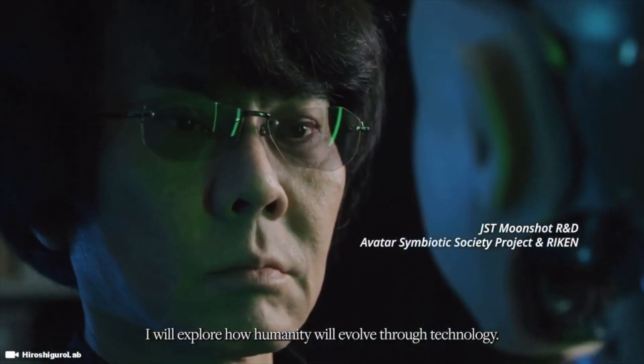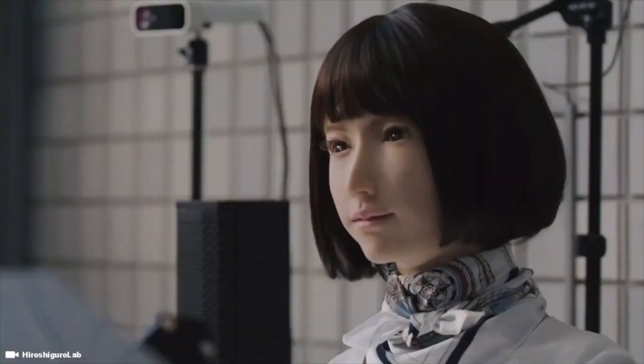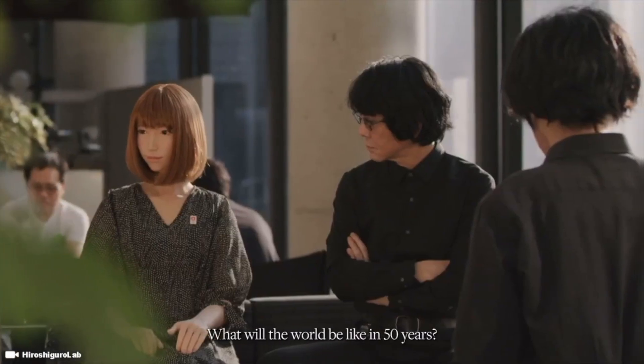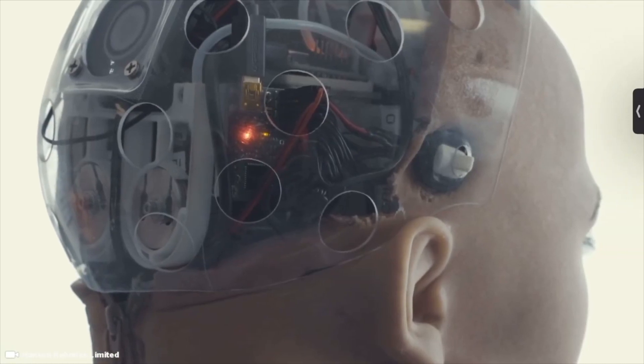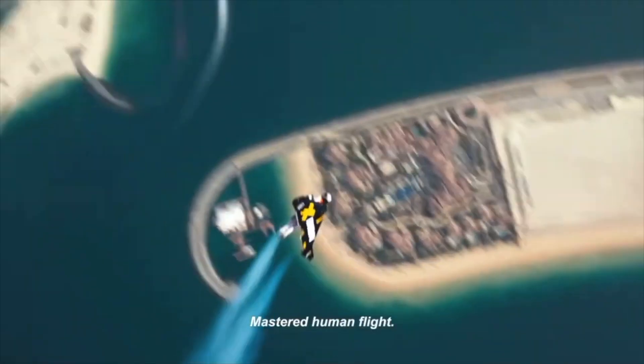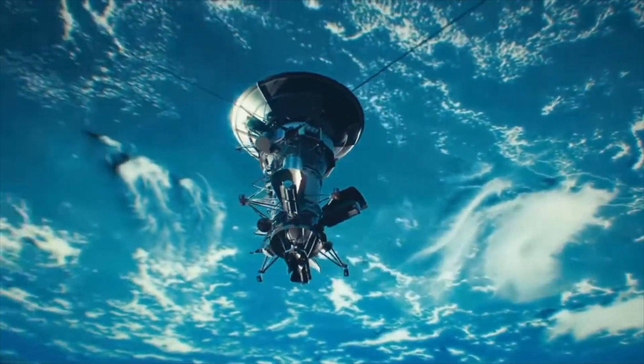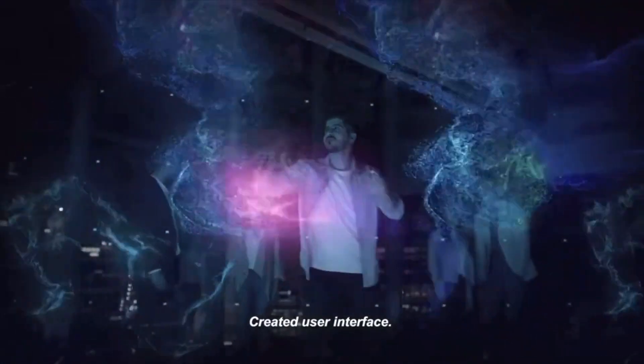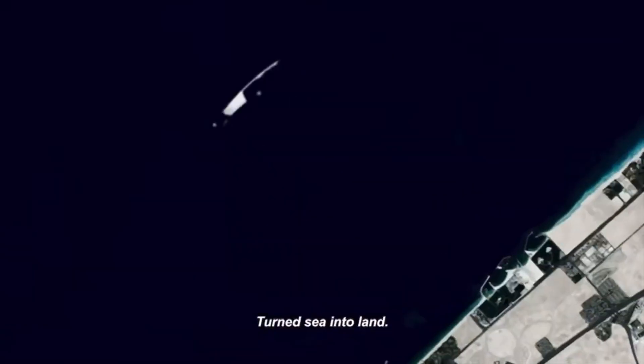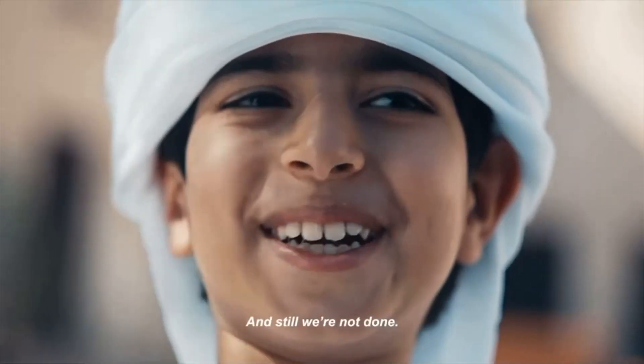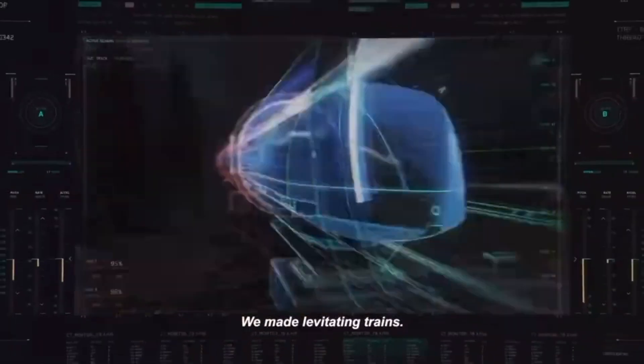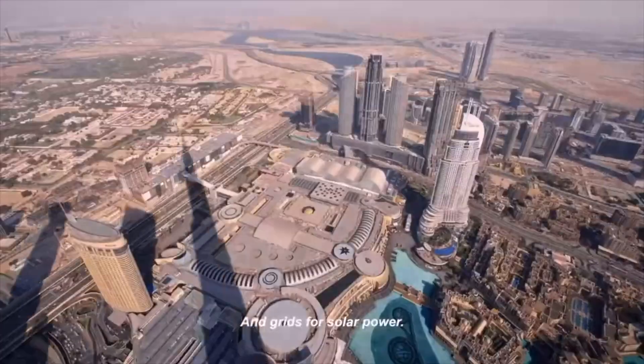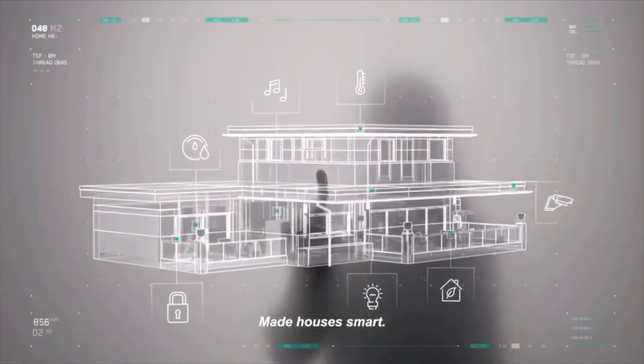So the world expo is an event that usually takes place for six months out of the whole year. In 2020, it was held in Dubai. In 2030, it's scheduled to be in Busan, South Korea. But in 2025, the expo is going to be in Osaka, Japan. Anyways, check out some of the footage that I found about 2025.